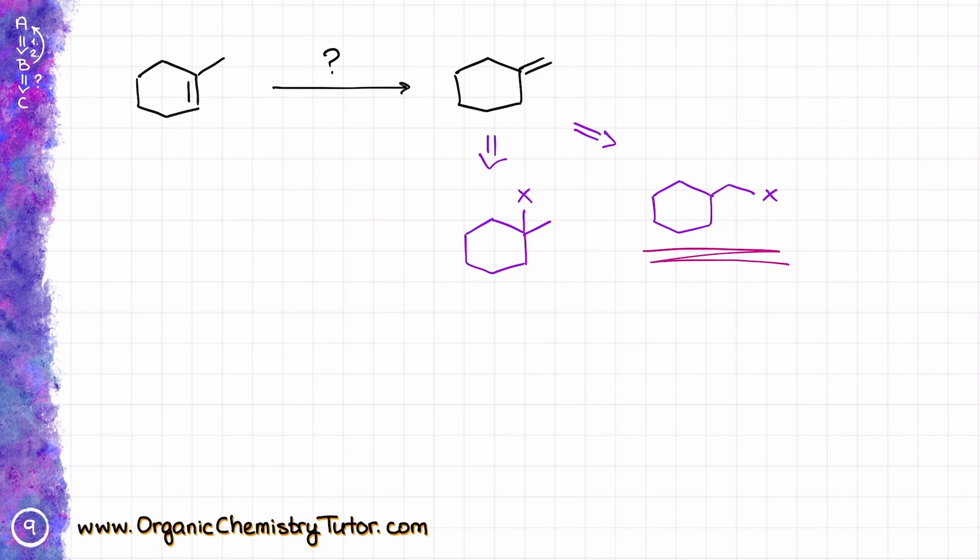But in order to do those, I need to have a double bond to begin with, which means I need to start with a double bond and that's kind of a closed circle, which means that this is not going to be a good option for us.